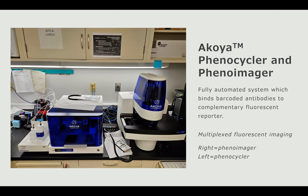Here is the Akoya PhenoCycler and PhenoImager — there's a picture from our lab. It is a fully automated system that binds barcoded antibodies to their complementary fluorescent reporter and gives you multiplex fluorescent imaging. When we stain the slides with barcoded antibodies, we can't see any structures until the antibodies are bound to their complementary fluorescent reporter — that's what the PhenoCycler does. The imager then images the fluorescent result. On the right you can see the PhenoImager, and on the left is the PhenoCycler.